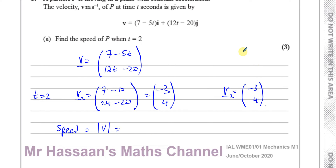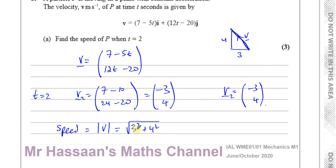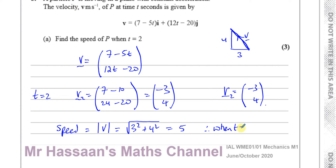For the vector (−3, 4), we use Pythagoras' theorem. It's a 3-4-5 triangle, so it's going to be 3 squared plus 4 squared — you don't have to worry about the minus sign because you're squaring it — which gives 9 plus 16 equals 25, and the square root of 25 is 5. Therefore, when t equals 2, the speed is equal to 5 meters per second.